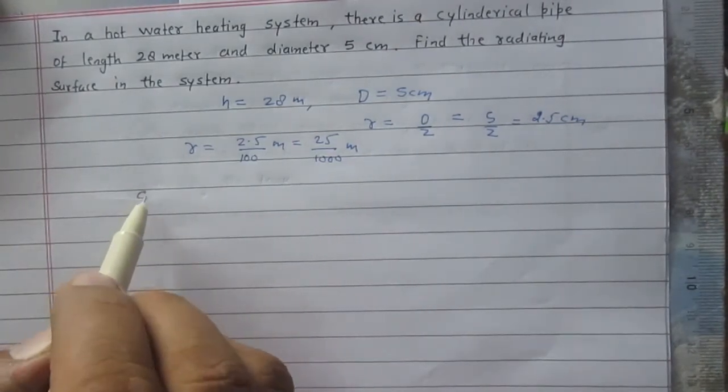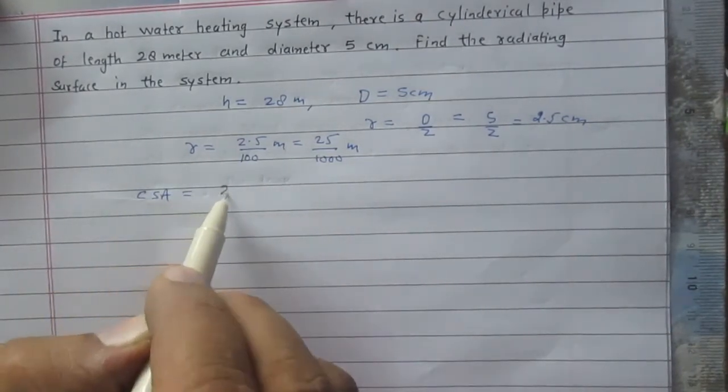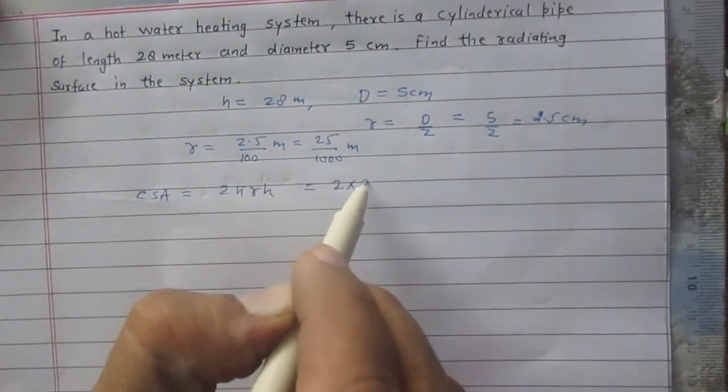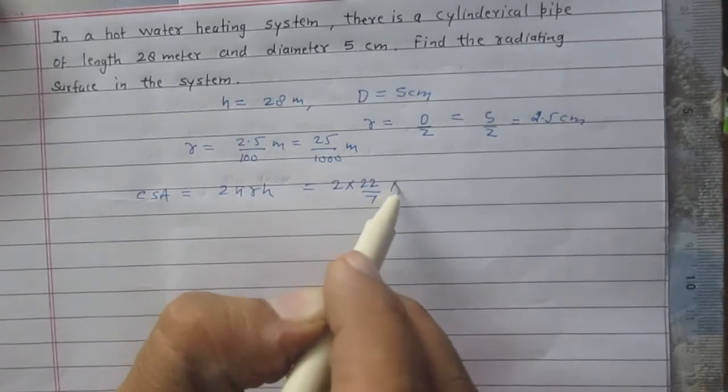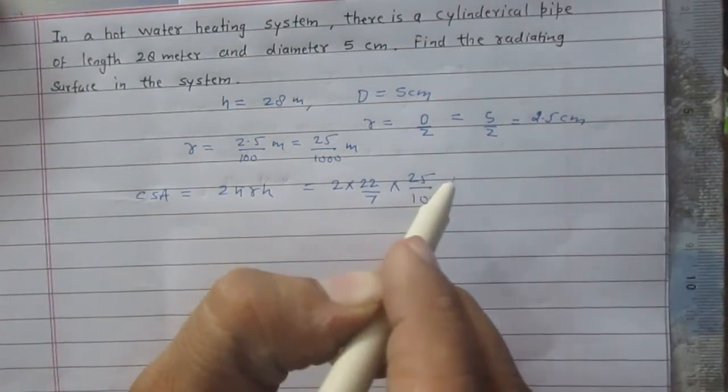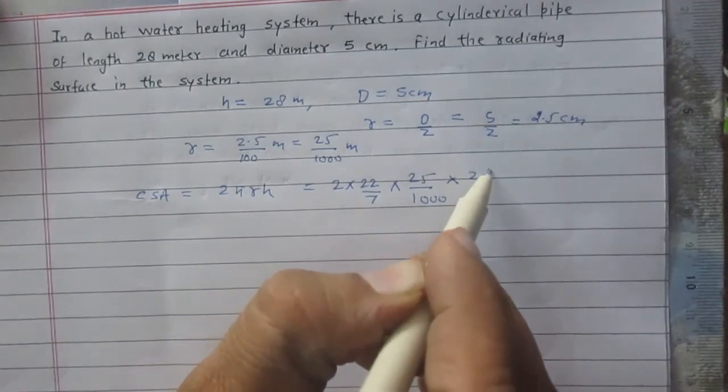Curved surface area of the cylinder is 2πRH. So it is twice of 22 by 7, radius is 25 upon 1000, and height h is 28.